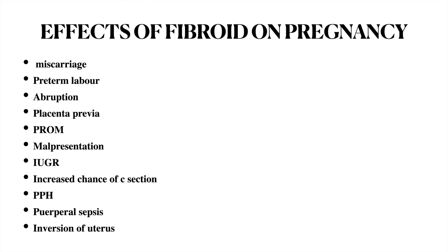The effects of fibroid on pregnancy include miscarriage, preterm labor, abruption, placenta previa, PROM, malpresentation, intrauterine growth restriction, increased chance of cesarean section, postpartum hemorrhage, puerperal sepsis, and inversion of uterus.